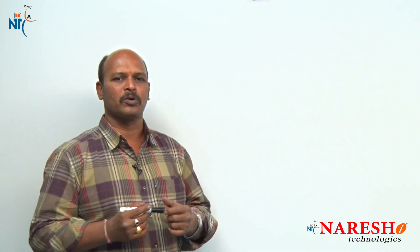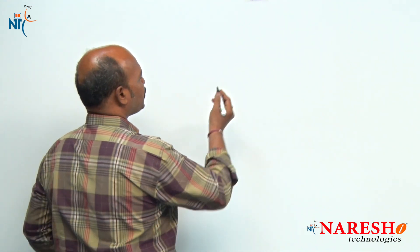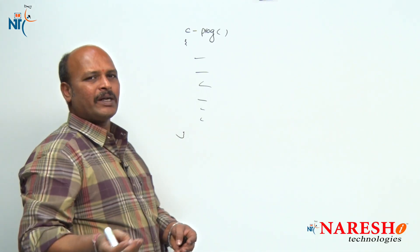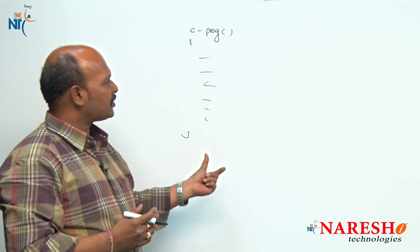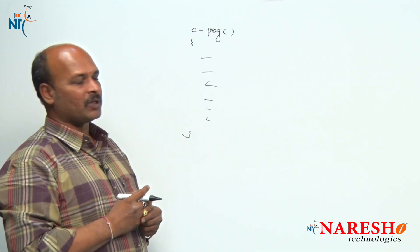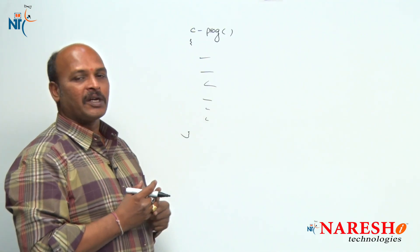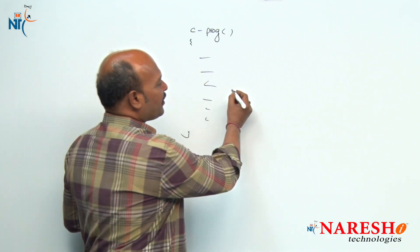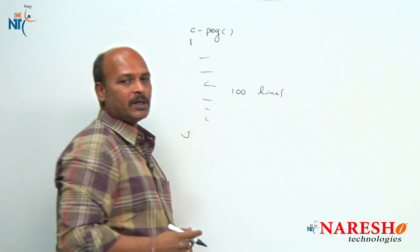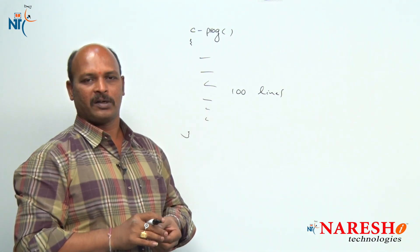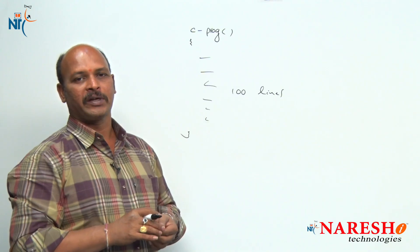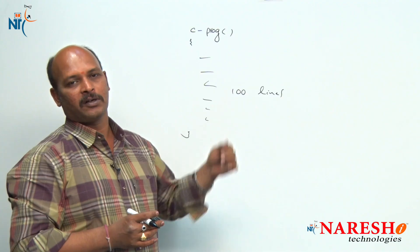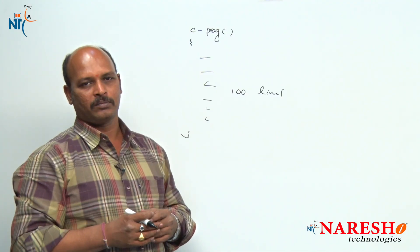Let us see — assume it is a C program which is having nearly 100 lines. After compilation there is an issue — it is going to show some error. Now the program contains 100 lines and it is showing an error but the error line number is not displaying.